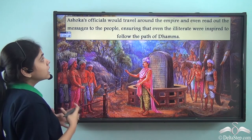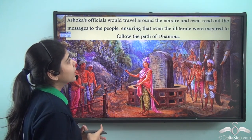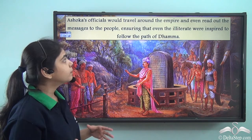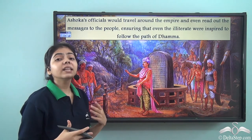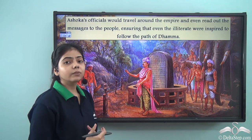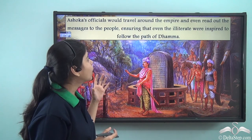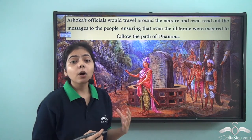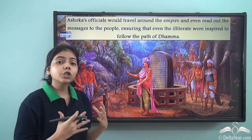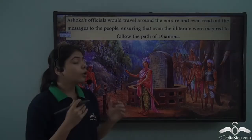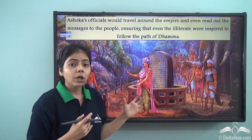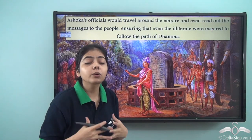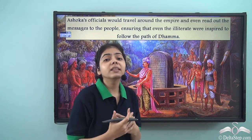Ashoka's officials would travel around the empire and even read out the messages to the people, ensuring that even the illiterate masses would follow the path of Dhamma. This is how Ashoka made sure that people who could not read the inscriptions could still understand his ideals and follow them in their real lives.